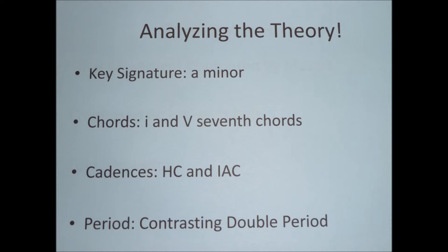The cadences I analyzed are intertwined with a double contrasting period. The bass and tenor sing their duet part, then the soprano and alto join, as I mentioned earlier. At the end of that, there is a half cadence. That process repeats itself, where this time at the end there is an imperfect authentic cadence. The words and length of the phrases are around the same, but the intervals and motion are different, which makes it an imperfect authentic cadence and also a contrasting double period.